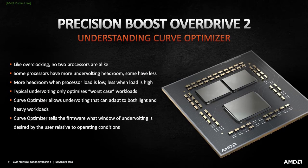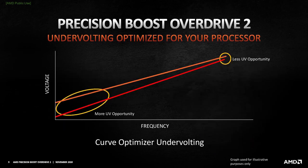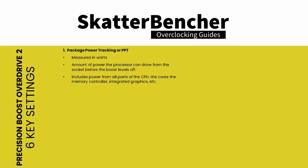A key new feature of Precision Boost Overdrive 2 is the Curve Optimizer, which allows the user to customize voltages and frequencies and adjust the default factory-set voltage-frequency curve. PBO2 has six key settings. Setting one: Package Power Tracking (PPT), measured in watts, is the amount of power the processor can draw from the socket before the boost levels off. This includes power from all parts of the CPU, including the cores, the memory controller, and integrated graphics.